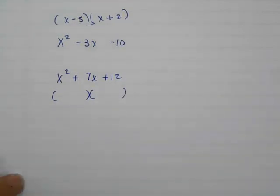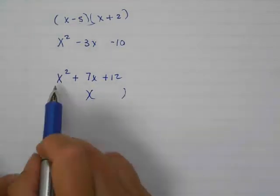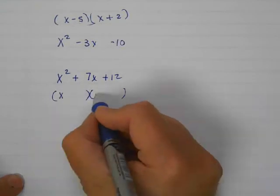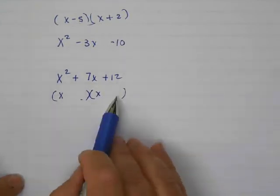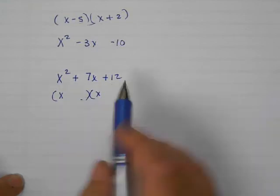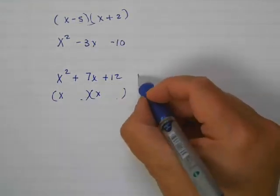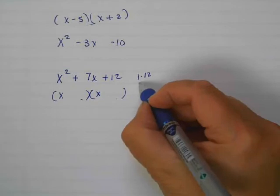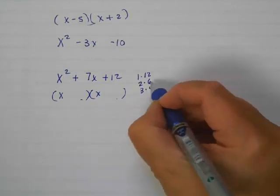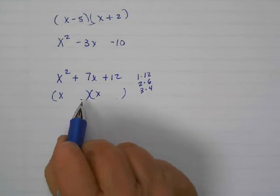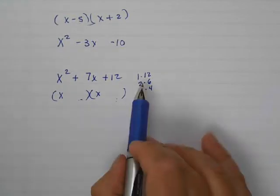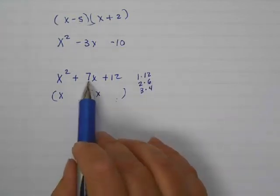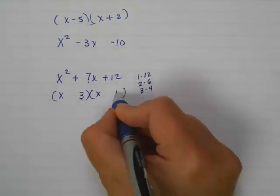So I know that on this one, because this is x squared, I'm going to have x and x. And I also know that these two numbers have to multiply to give me that number. So on a side note, I just write out the factor pairs for 12. These are the different things that I could put here and here that would multiply to give me 12. So then I have to think, which combination of these numbers could give me 7?